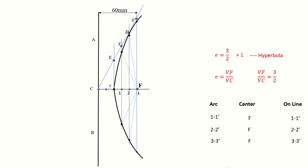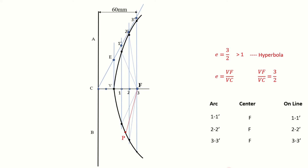We will take any random point P beyond the curve. To draw the normal and tangent at point P, first we will draw a line joining P and F, then draw a second line perpendicular to PF. Wherever this second line intersects the directrix, from that point we draw a third line joining point P — this line is called the tangent to the curve. Drawing a perpendicular to this tangent gives the normal to the curve at point P.